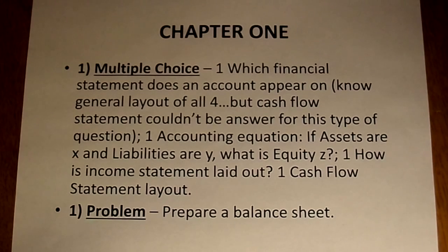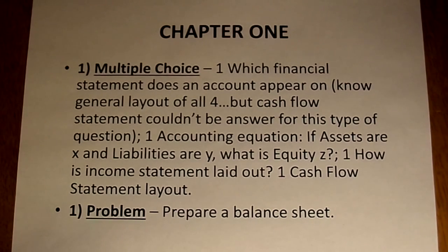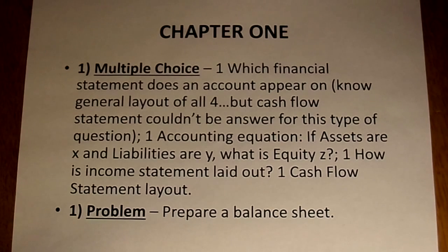Check that, because at the bottom it says it can't be the cash flow statement. So just the three statements: balance sheet, income statement, or statement of stockholders' equity. There's a second multiple choice question on the accounting equation. The basic equation is assets equals liabilities plus equity.